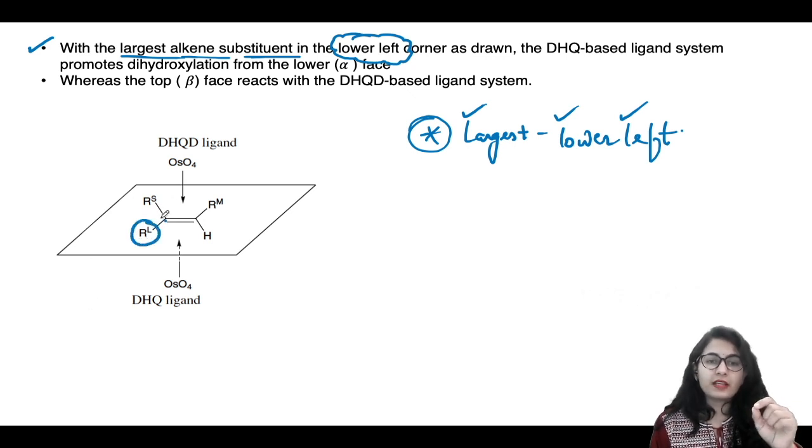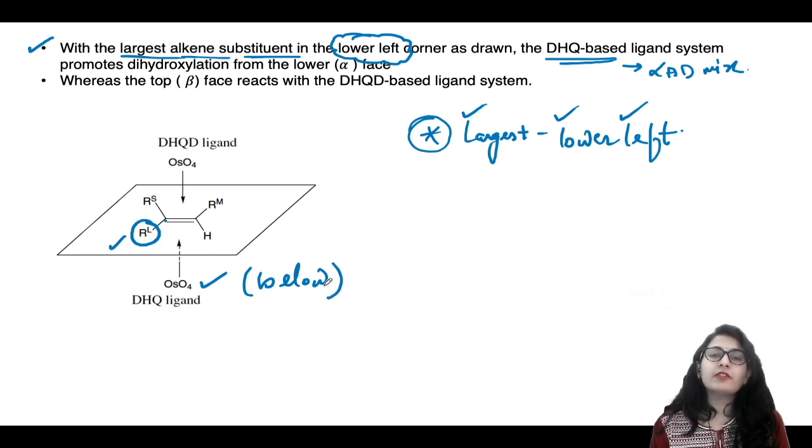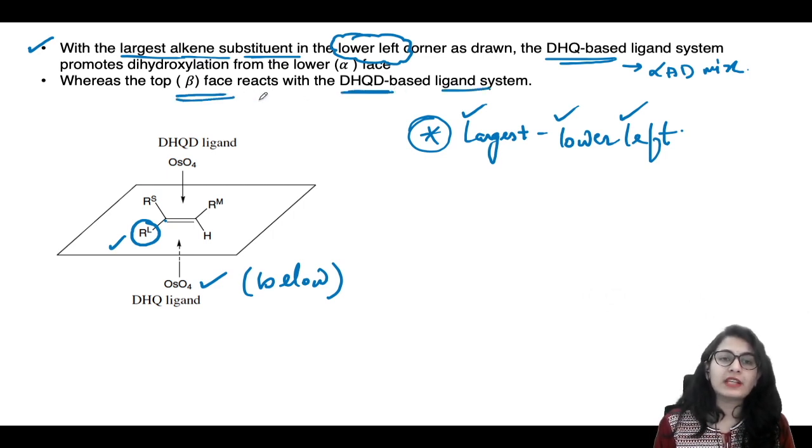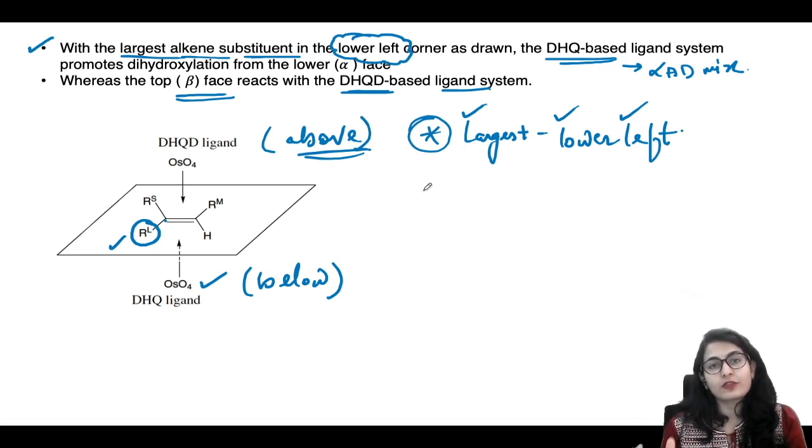Then we add the DHQD-based ligand, the alpha-AD-mix, which will give you addition from below the plane. The beta-AD-mix or DHQ-based ligand gives you addition from above the plane. First take your alkene such that the largest group is written on the left bottom, your lower left corner. Let's try this out on examples.